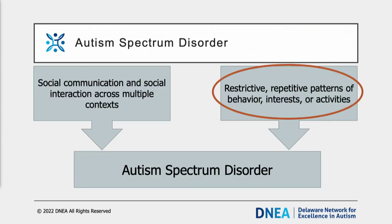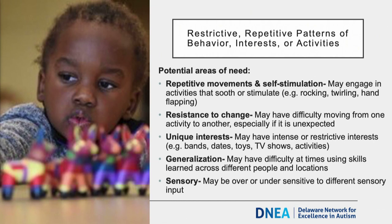The next core area is restricted repetitive patterns of behavior, interests, or activities. Individuals with autism may engage in repetitive movements or self-stimulatory activities that soothe or stimulate, such as rocking, twirling, or hand flapping. You may also encounter resistance to change, which can manifest as difficulty transitioning from one activity to another, especially if the transition is unexpected. Some people may have specific or narrow interests, for example specific bands, calendar dates, toys, or TV shows. Autistic people may also struggle to generalize information learned in one setting to another. There can also be an increased or decreased sensitivity to sensation like touch, sound, or taste, manifesting as narrow eating habits, refusal to wear certain fabrics, or covering their ears when exposed to loud noises.